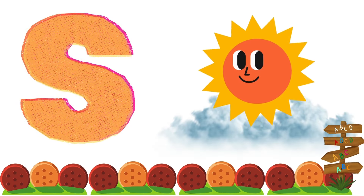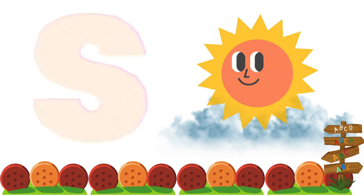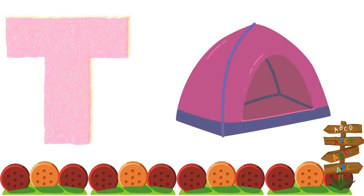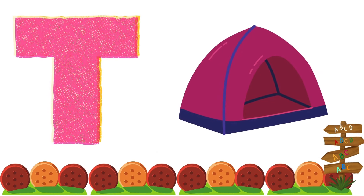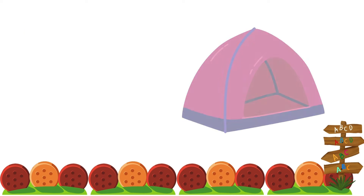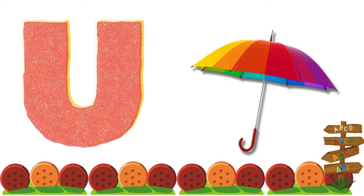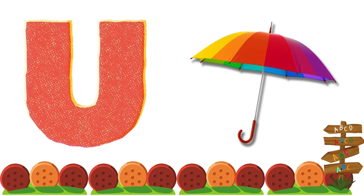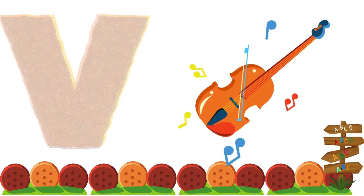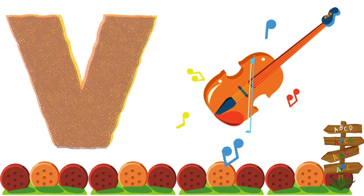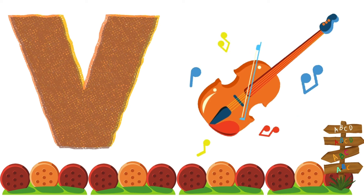S is for Sun. T is for Tent. U is for Umbrella. V is for Violin.